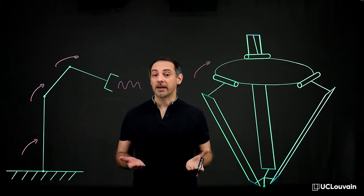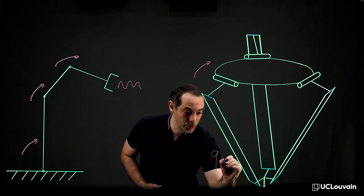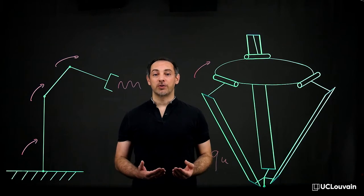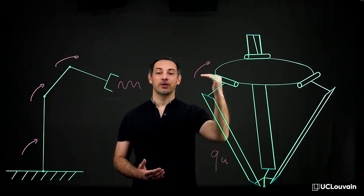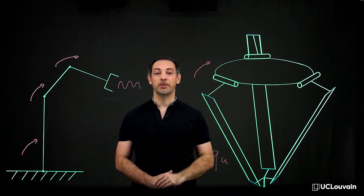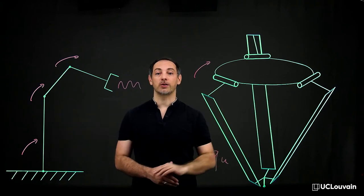Which exactly corresponds to the number of independent coordinates. If the number of actuated joints is larger than the number of degrees of freedom, then the system is said to be overactuated. Contrarily, it is said to be underactuated.